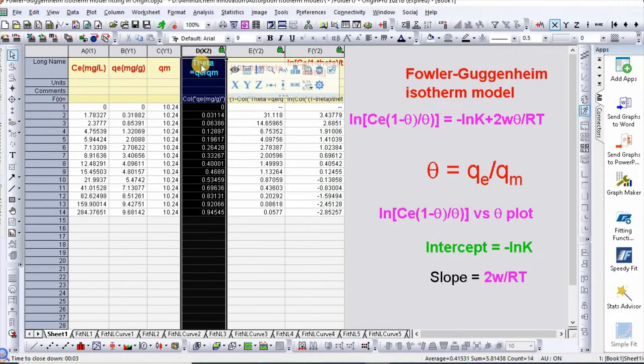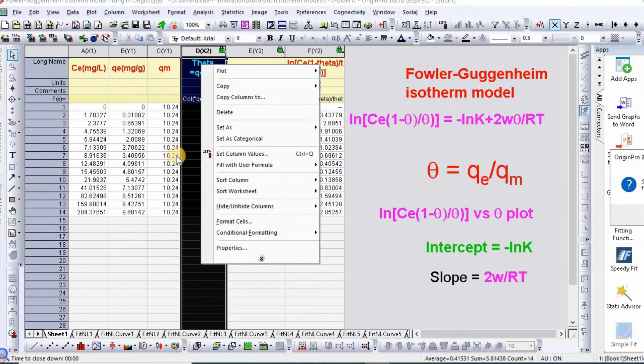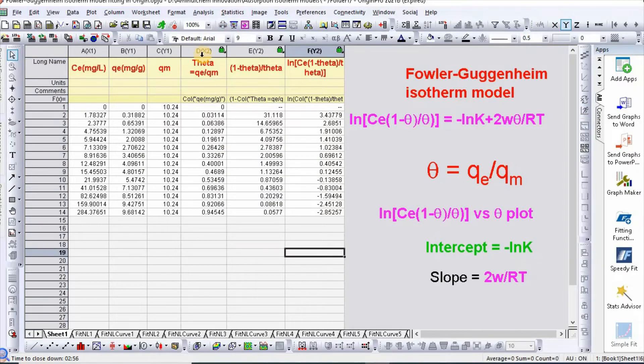Just select this and right click, then set column values. In order to find theta, you need to write theta equal to Qe divided by Qm.